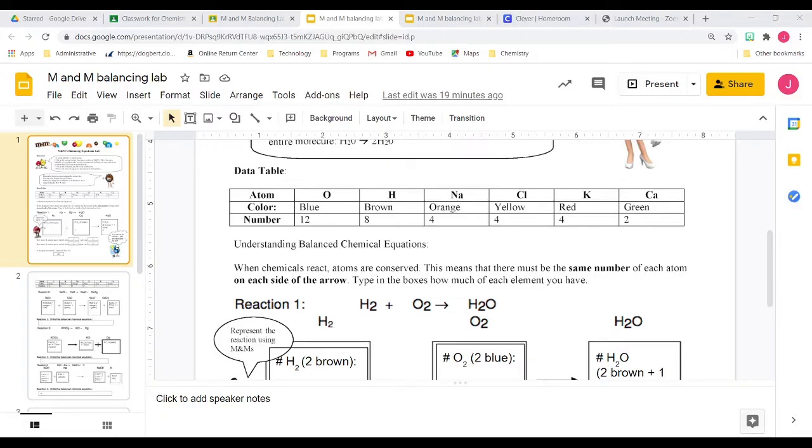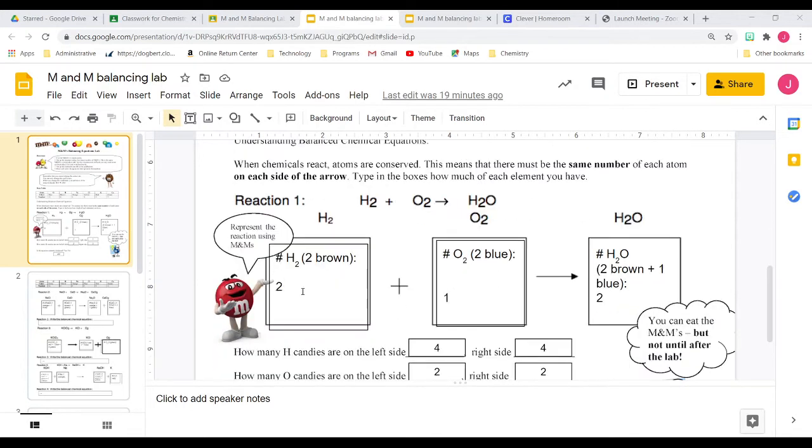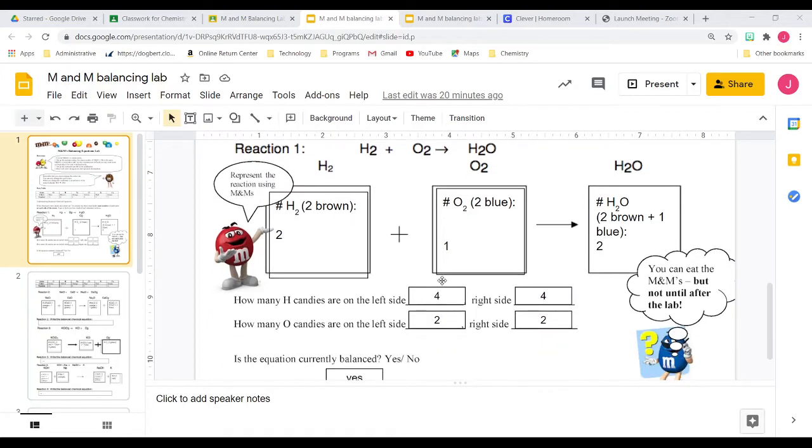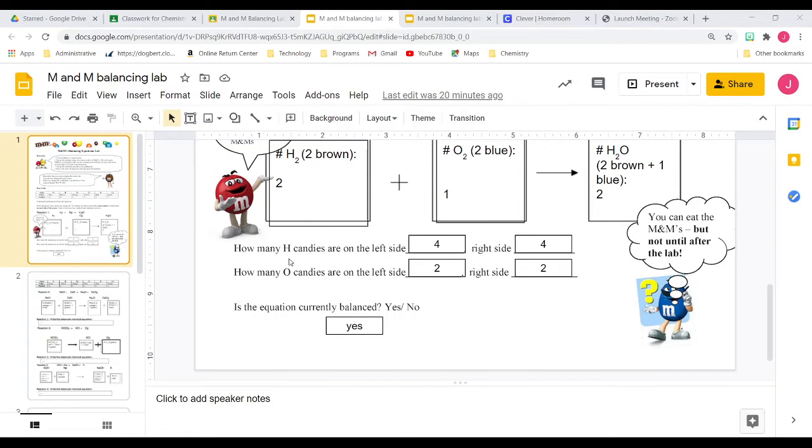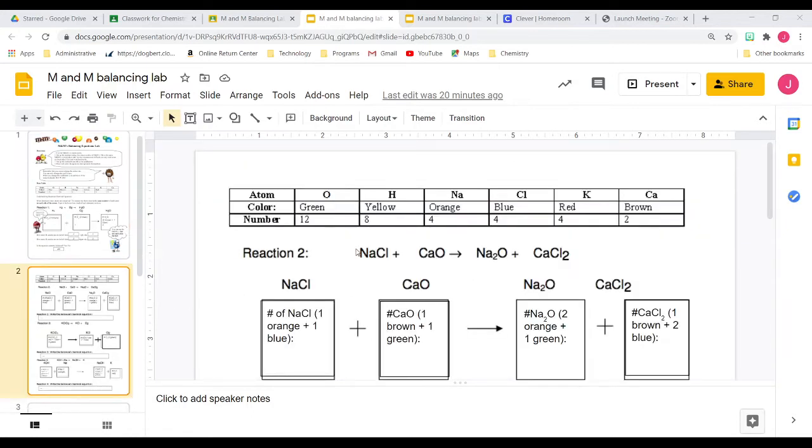Okay, so here's our lab sheet again. And so you want to go down, and that's where I have, I have two browns here. I've put one blue here with two here. And then I counted up how many H candies or brown do I have. I have four on the left and four on the right. And then I ended up with two and two for oxygen. And yes, this is balanced.